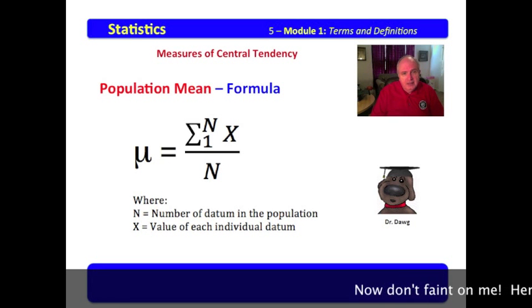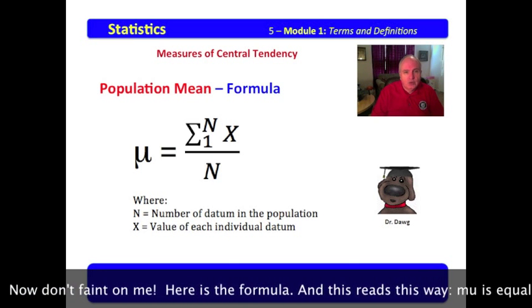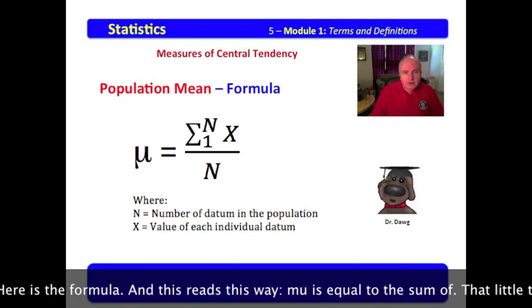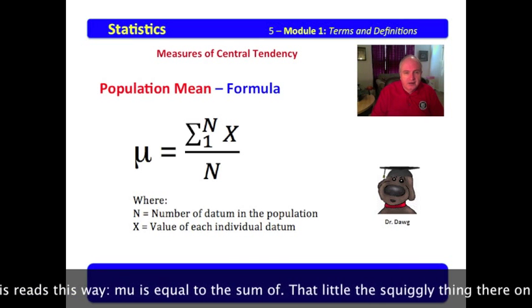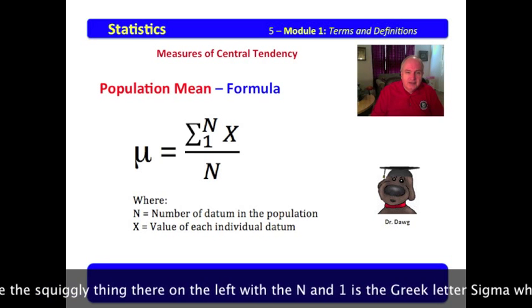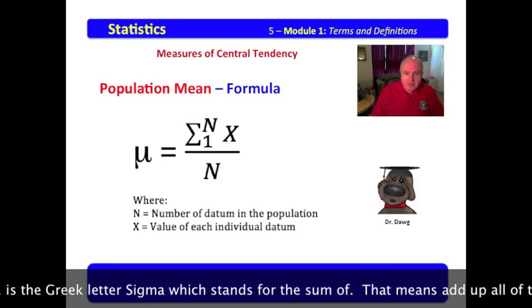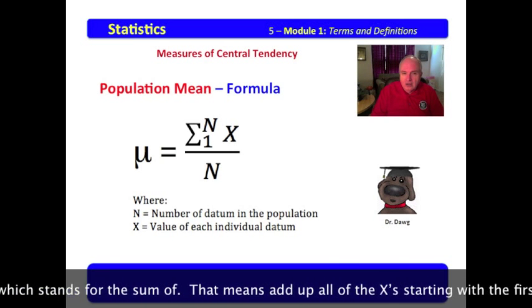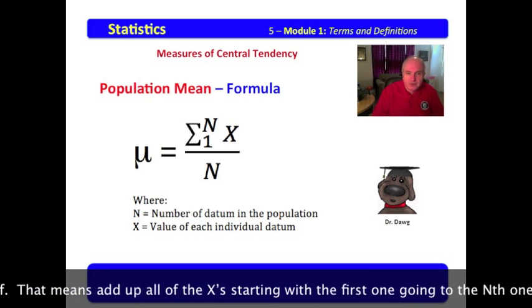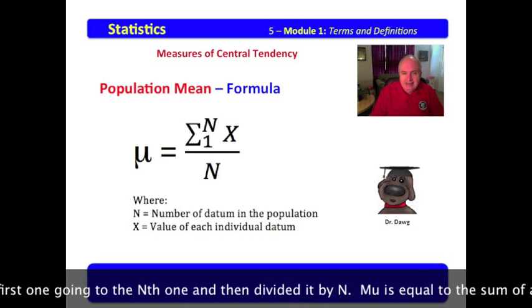Now, don't faint on me. Here's the formula, and this reads this way. Mu is equal to the sum of, that little squiggly thing there on the left with the N and the 1 is the Greek letter sigma, which stands for the sum of. That means add up all of the Xs, starting with the first one, going to the Nth one, and then divide it by N.